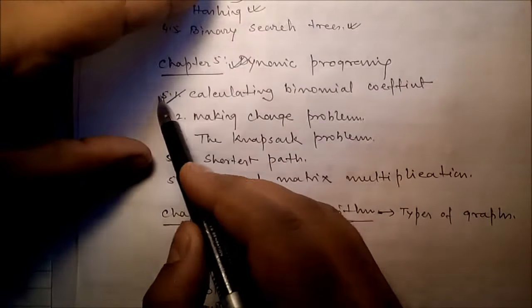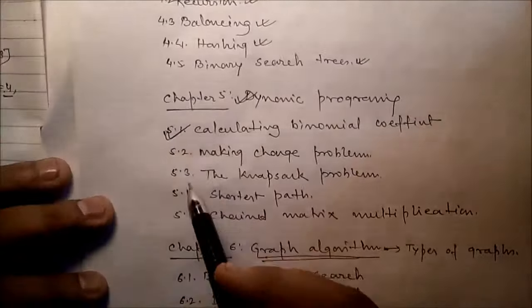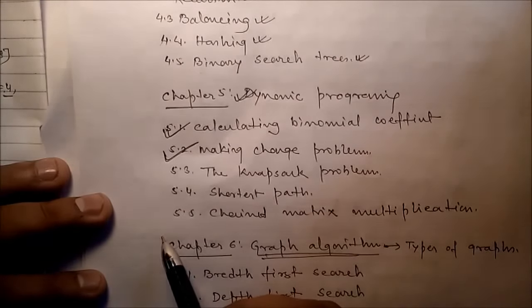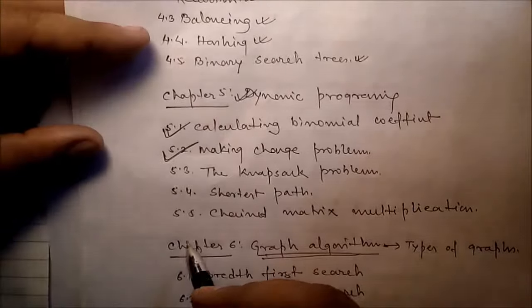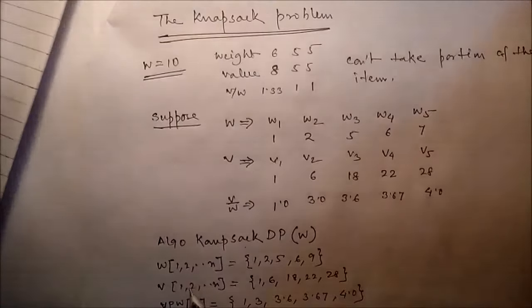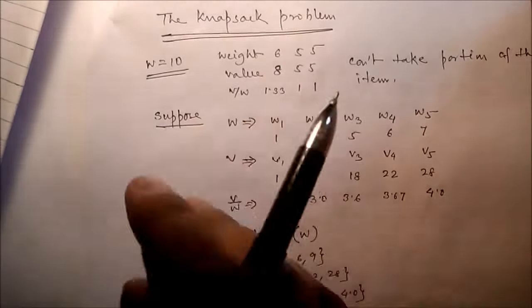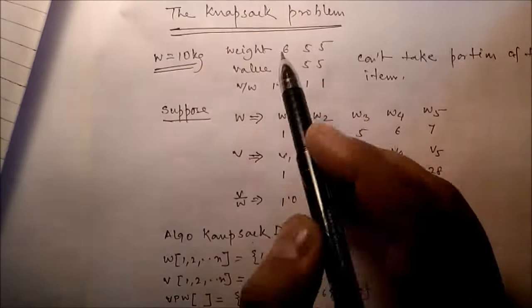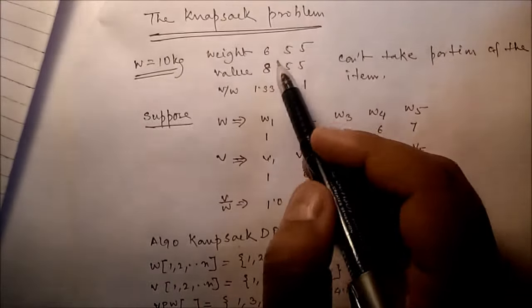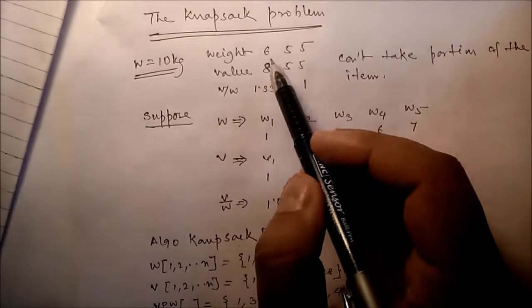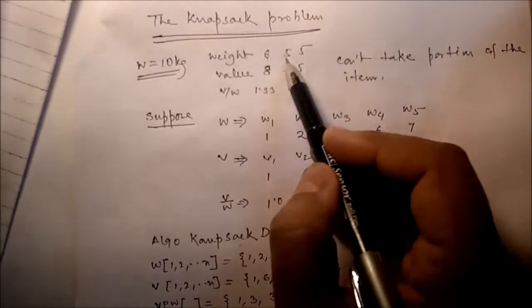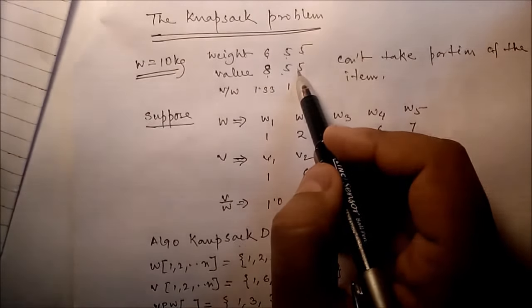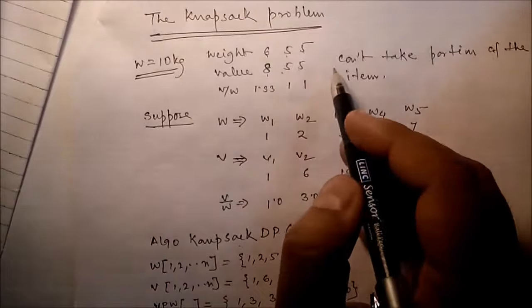We have already completed calculating the binomial coefficient and the making change problem. Now we go for the knapsack problem. You have a knapsack — you have a bag and you can carry 10 kilograms only, and you have three types of items: weights are 6 kg, 5 kg, and 5 kg, and values are 8 rupees, 5 rupees, and 5 rupees.